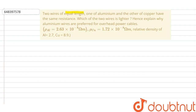In the question, it is given that two wires of equal length — one of aluminum and the other of copper — have the same resistance. Which of the two wires is lighter? Hence explain why aluminum wires are preferred for overhead power cables. The resistivity of aluminum is 2.63 × 10⁻⁸ ohm·meter, resistivity of copper is 1.72 × 10⁻⁸ ohm·meter, relative density of aluminum is 2.7, and copper is 8.9.